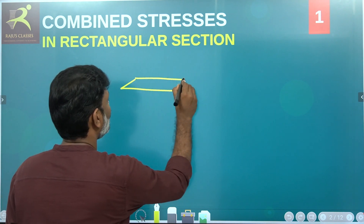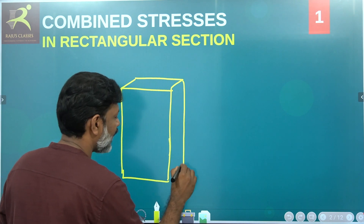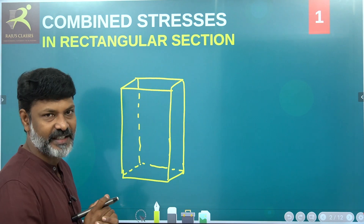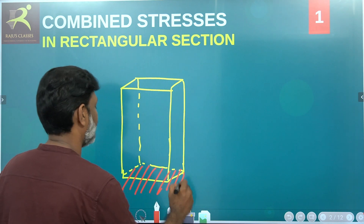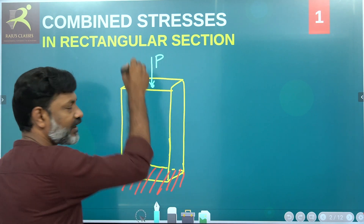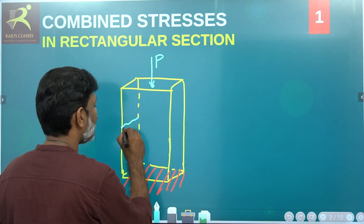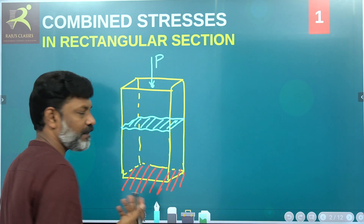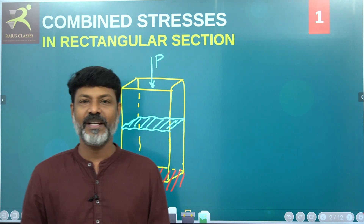Suppose there is a structural element. If we take a rectangular section — a simple rectangular section — and we apply a load at the center of the section, then this area is under direct compression. The entire area is under direct compression when the load acts at the center of the element.